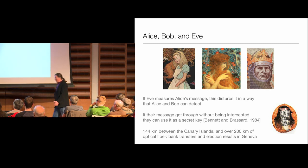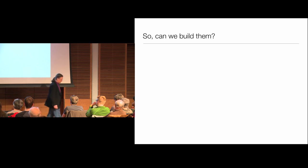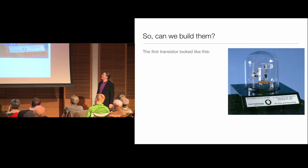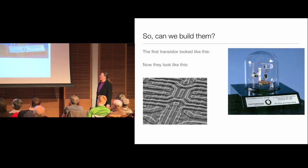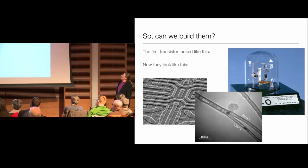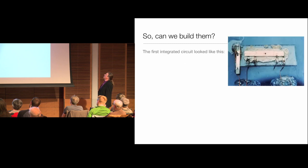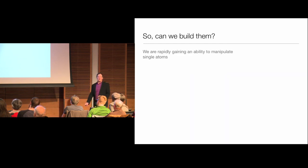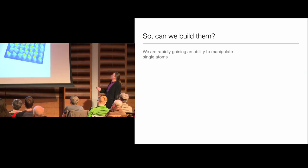So can we build these things? How much should we worry? This is what the first transistor looked like — kind of clunky, taking up a lot of space. This is what transistors look like now — we're making transistors that are thinner than a human hair. This is what the first integrated circuit looked like, stuck to things with glue, and this is what they look like now. We are getting better at building very tiny things, and we're rapidly gaining an ability to move single atoms and even single electrons around.